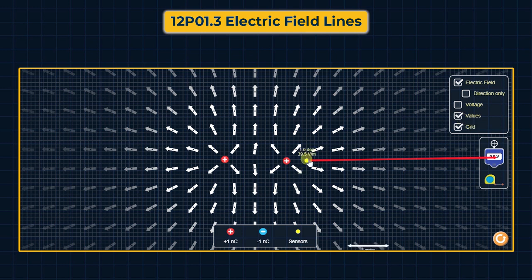The electric field value at this point is 39.5. Moving further to the right side, the value decreases to 10.2 volt per meter.